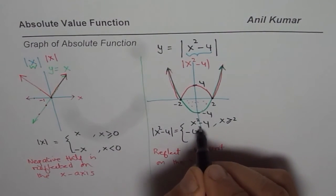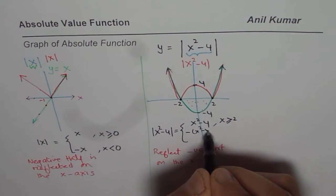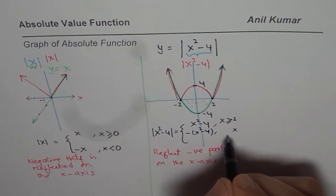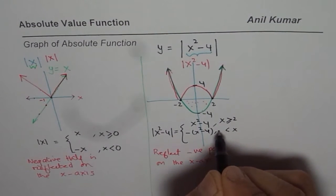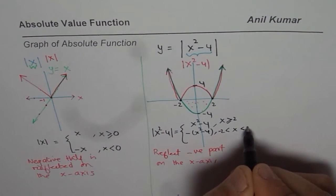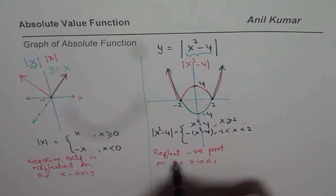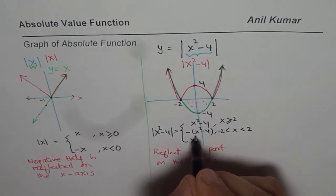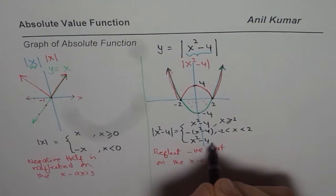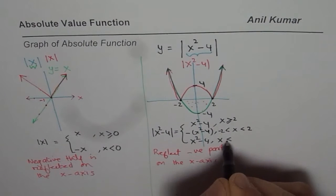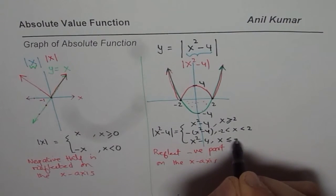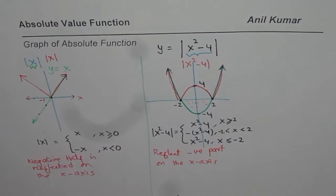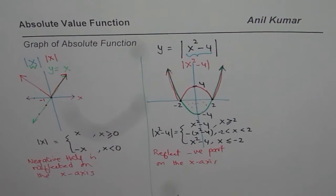As a piecewise function, we can write |X² - 4| as negative of (X² - 4) when X is greater than -2 but less than +2, and as (X² - 4) when X is less than or equal to -2 or greater than or equal to +2. So we could write this absolute function as a piecewise function as shown.